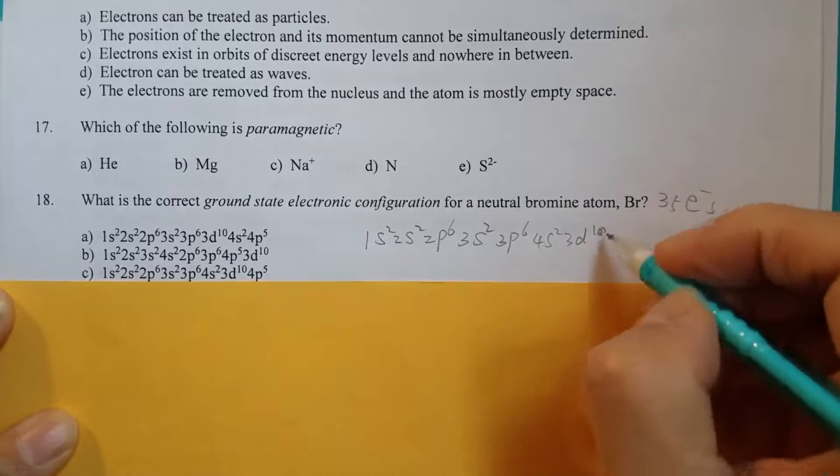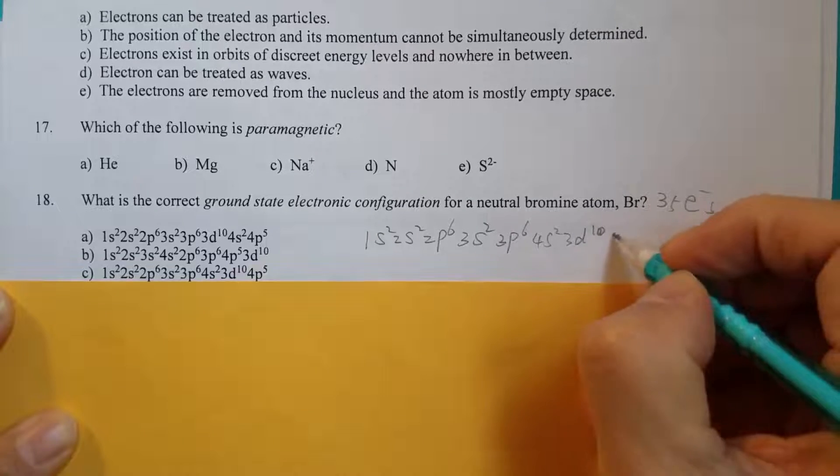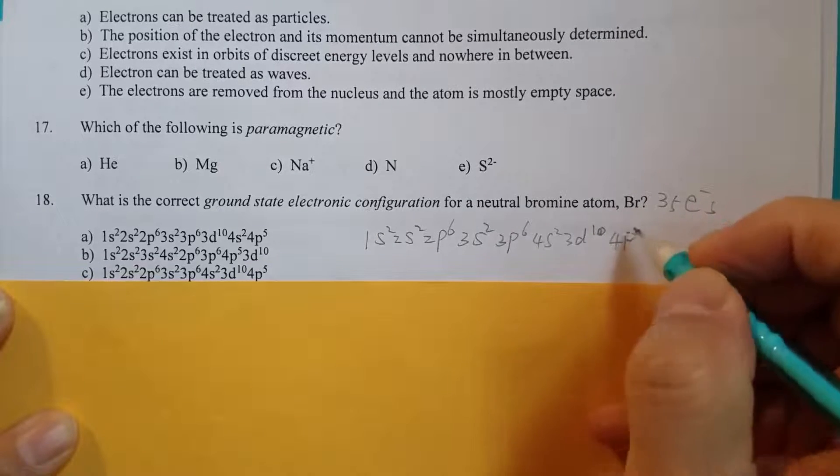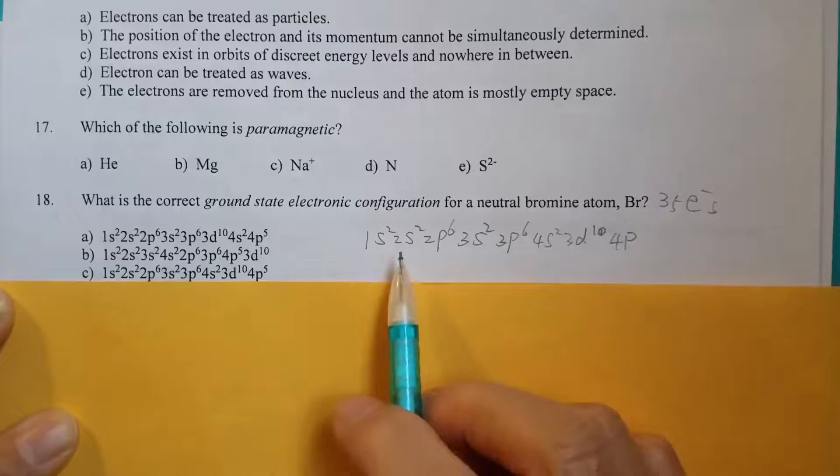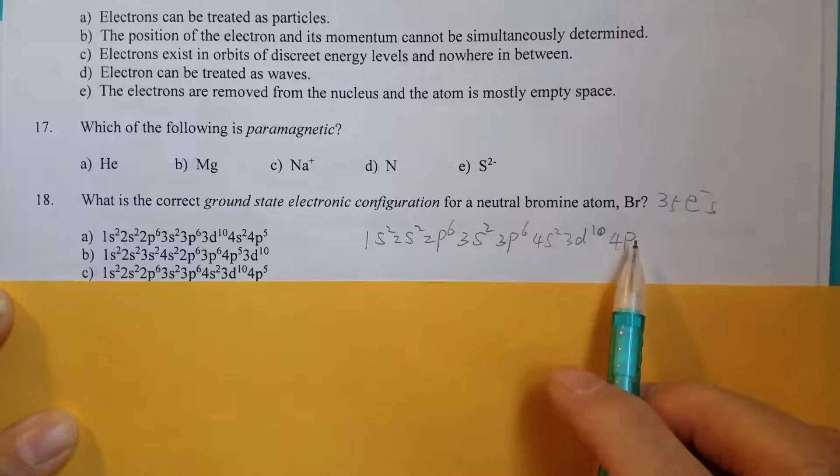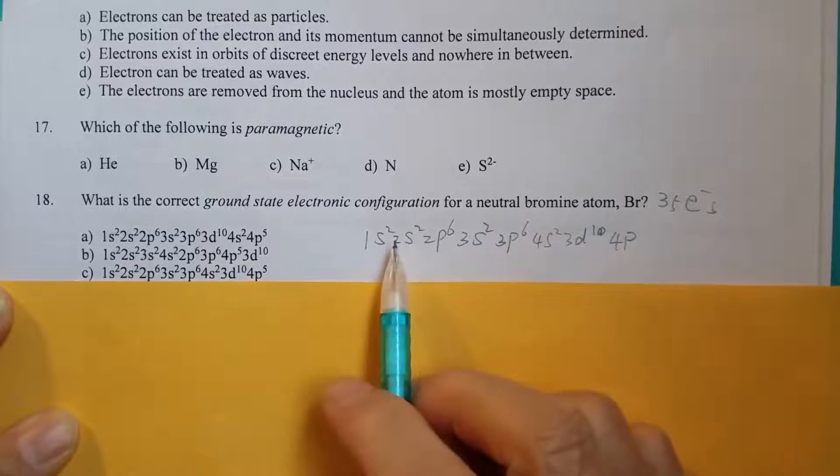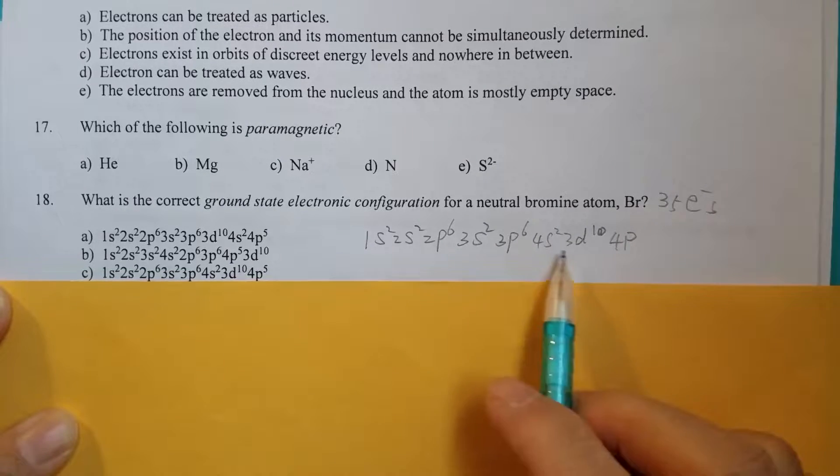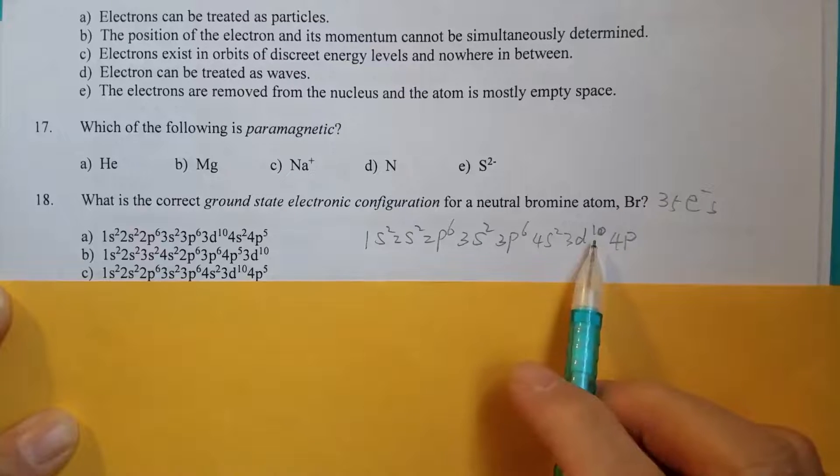Okay, then we will have 4p. So before we can determine how many 4p electrons we have, we have to count the total number of electrons assigned so far.